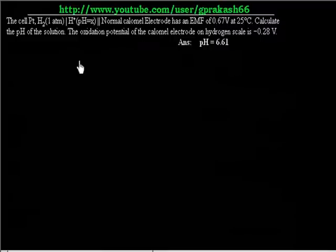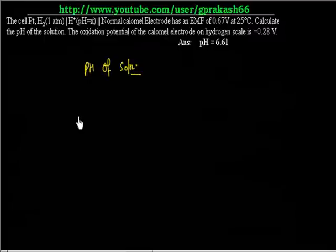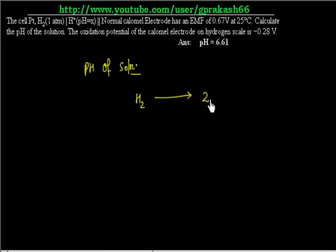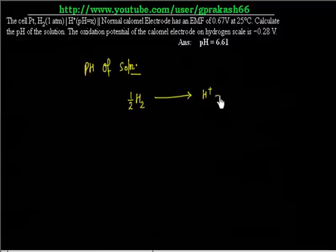We have to calculate the pH of a solution. What is given? On the left side, we have hydrogen: 2H⁺. This is one electrode. So H₂ goes to 2H⁺, or we can write it as half H₂ → H⁺ + 1 electron — let us write in terms of 1 electron. So: ½H₂ → H⁺ + 1 electron.